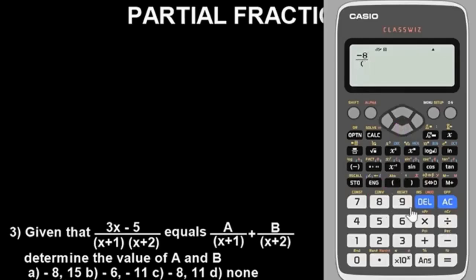So we have fraction, we have (x + 1), close the bracket. Go here and put plus, and that fraction there when B is 15, in bracket we have (x + 2).